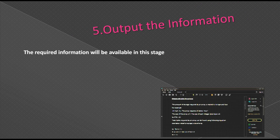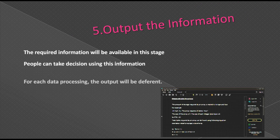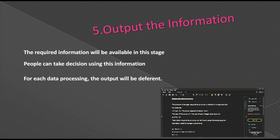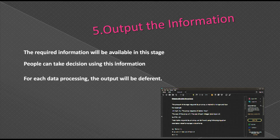The fifth stage is output the information. The processed information will be available in this stage, and people can take decisions using this information. For each data processing operation the output will be different. We will get information in different formats — in printed format or in digital format on a monitor.